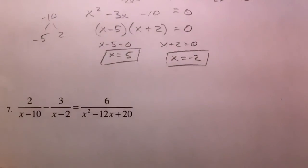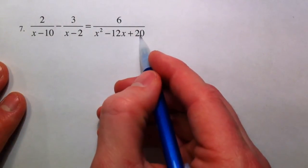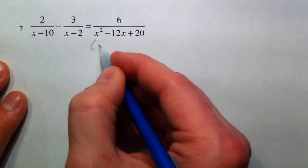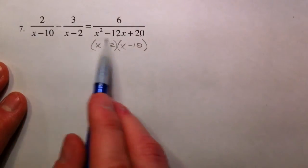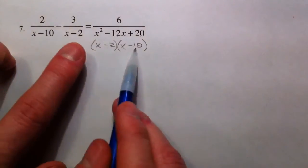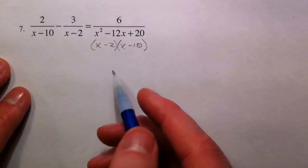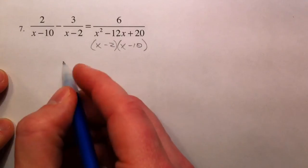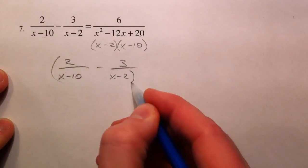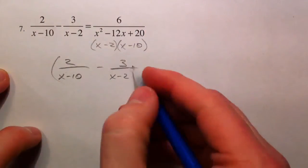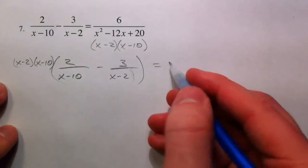For the last example, start by factoring if you can. What multiplies to 20 and adds to negative 12? That gives x minus 2 times x minus 10. A lot of these problems are rigged in the sense that they have common factors already — the 10 and the 2 can help you factor. So we have 2 over x minus 10 minus 3 over x minus 2, and this gets multiplied by x minus 2 times x minus 10, the lowest common denominator.